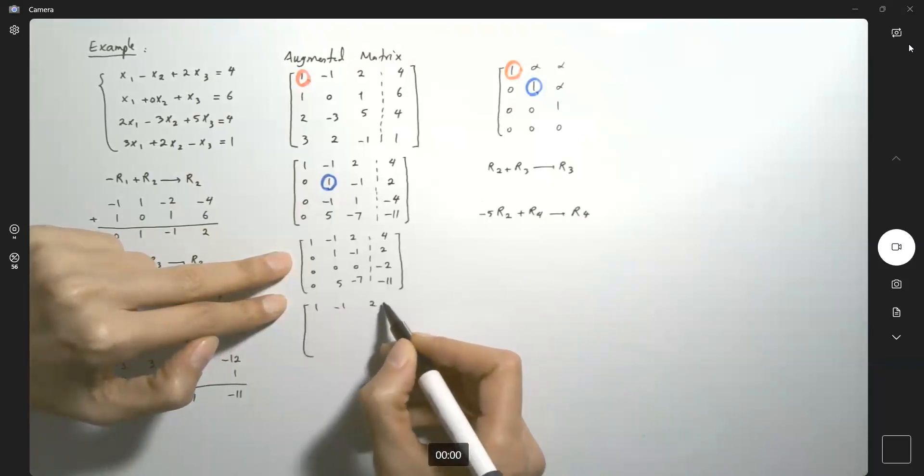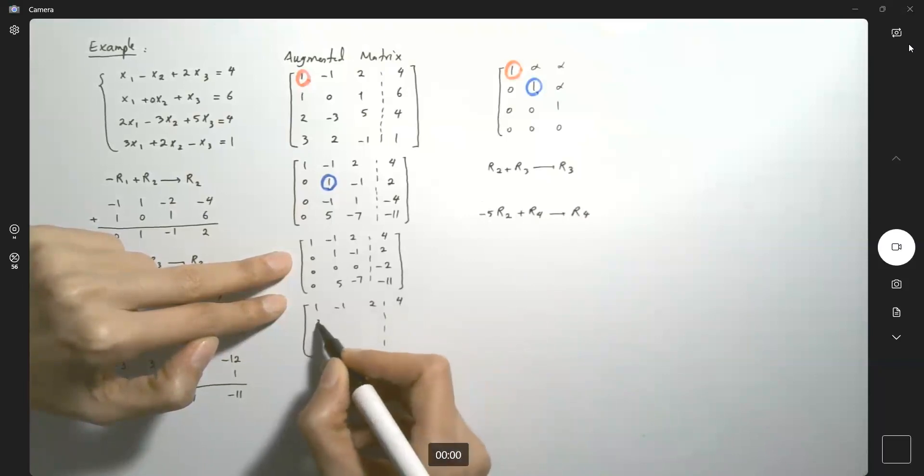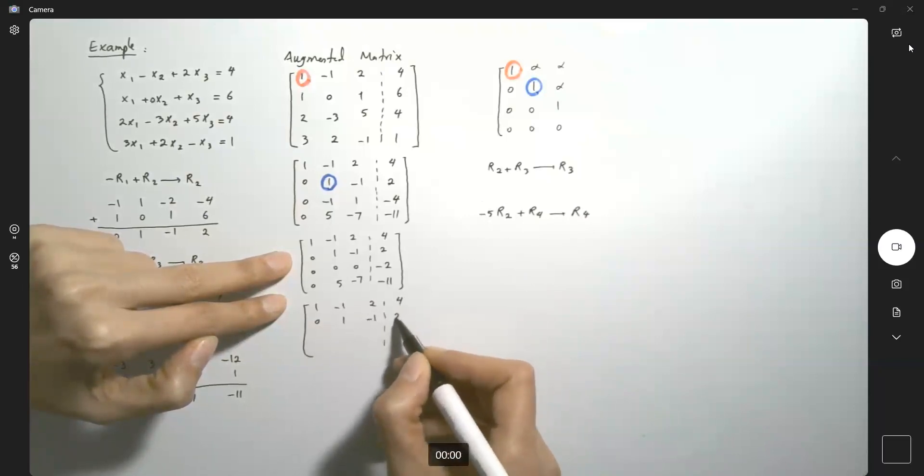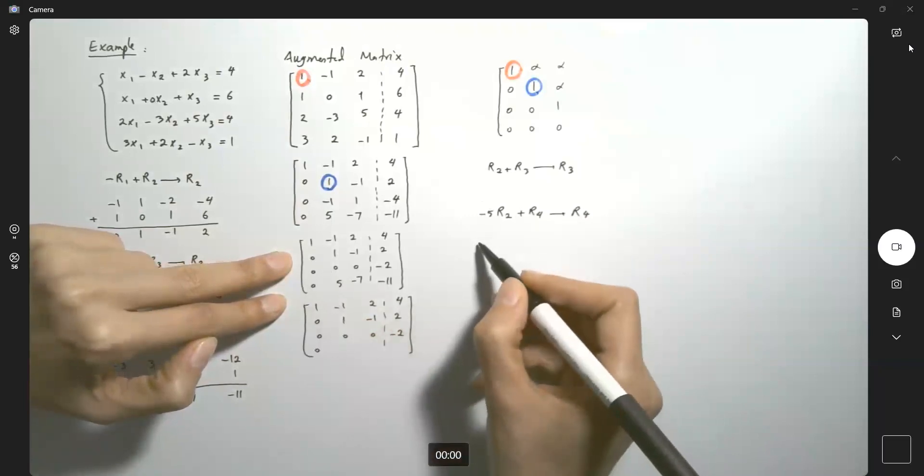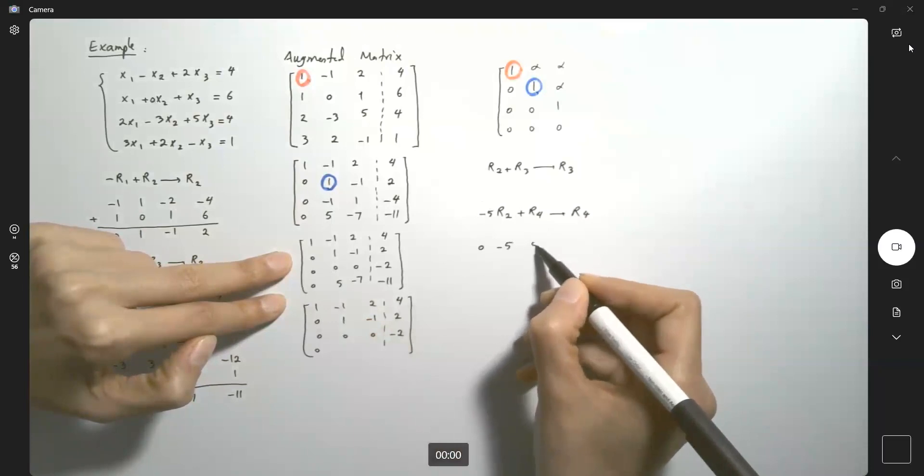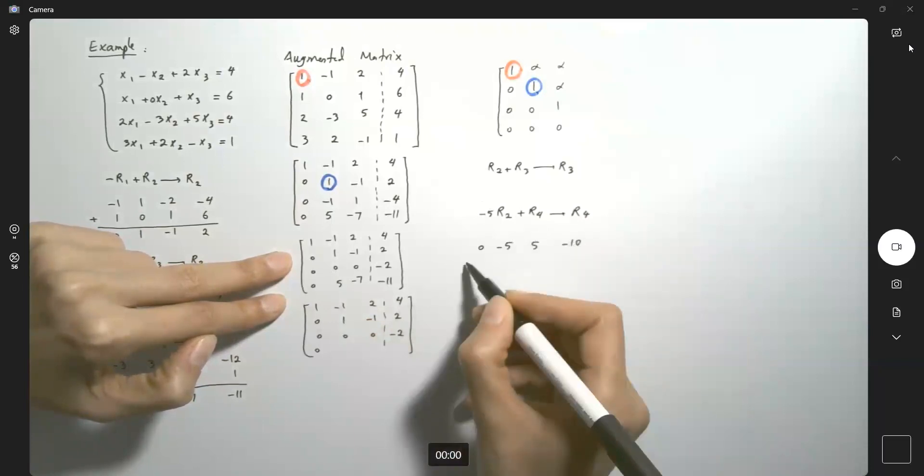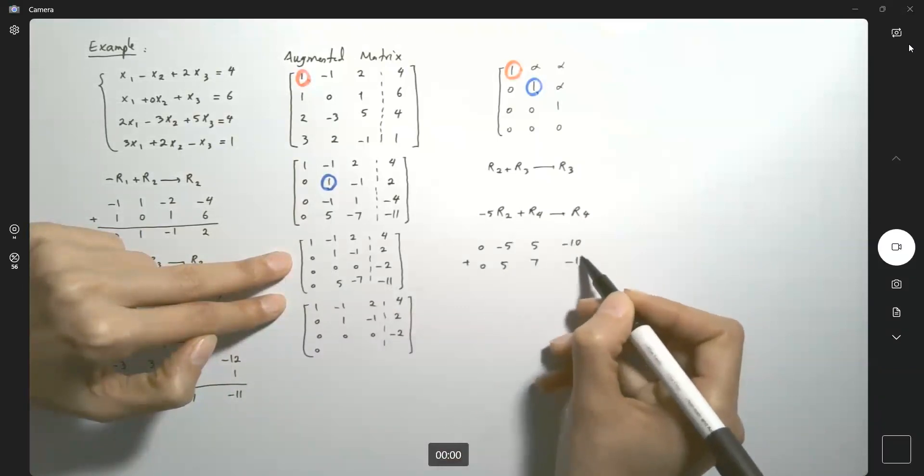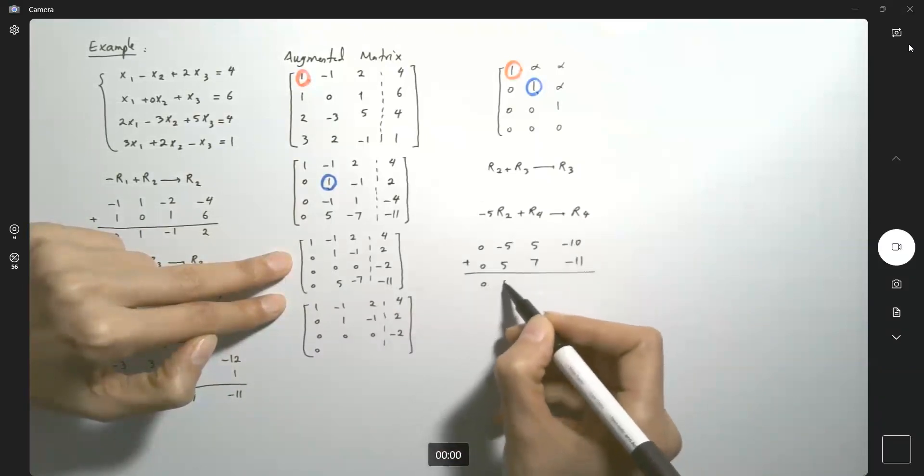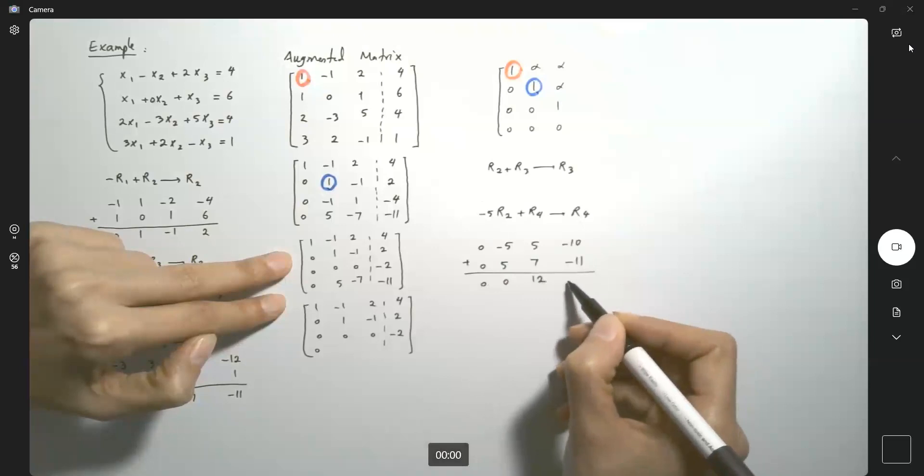One, negative one, two and four. Zero, one, negative one, two. And then zero, zero, zero, negative two. So zero plus zero is zero. We can write down everything. We have zero. We have negative five. We have five and we have negative 10. Plus zero, five, seven, negative 11, which is zero, zero, 12 and negative 21.